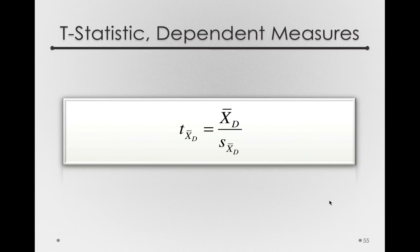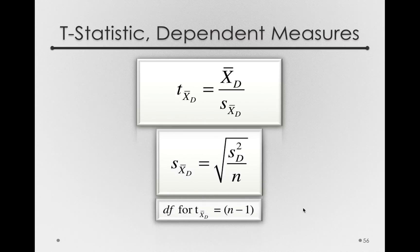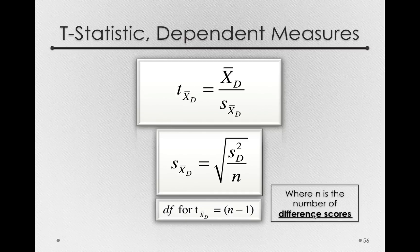Our t statistic for dependent measures therefore reduces to the mean of the difference scores in our sample divided by the estimated standard error of the difference score mean. That estimated standard error is the square root of the variance of the difference scores divided by n — incredibly similar to a normal standard error, which is the square root of the variance estimate over n. The degrees of freedom for our t statistic is simply n minus one, where n refers specifically to the number of difference scores. In this study we have 100 observations, yielding 100 difference scores, one for each individual, so our degrees of freedom is 99.